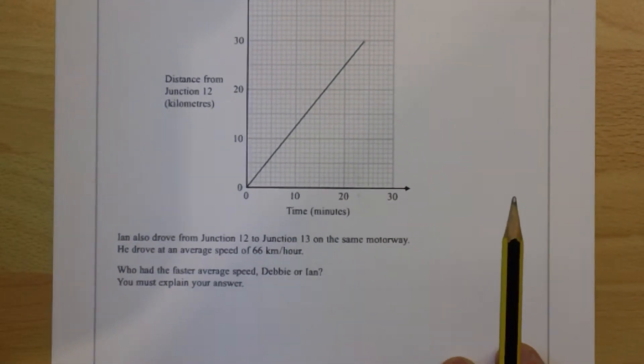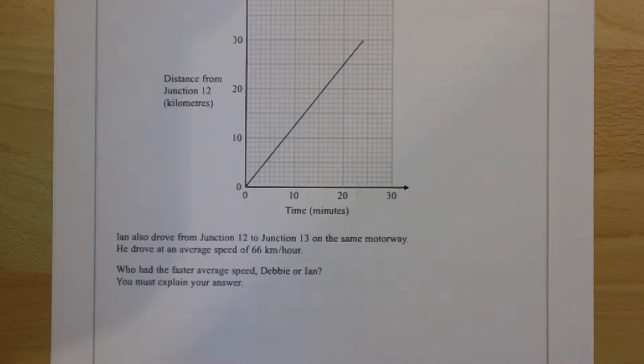We know that Ian also drove the same journey and he drove at an average speed of 66 kilometres an hour. We need to compare the two journeys and decide who has the faster average speed.